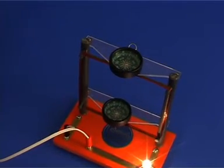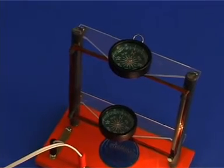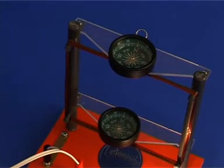Observe the compass needles. Both are now perpendicular to the coil plane but point in opposite directions. The upper one points to the right and the lower to the left.